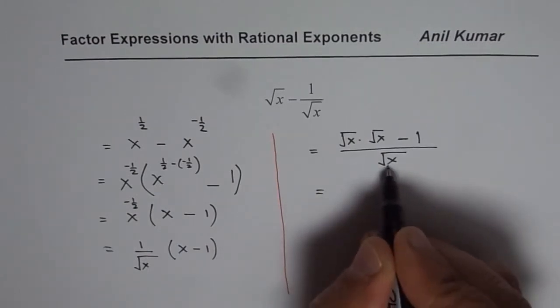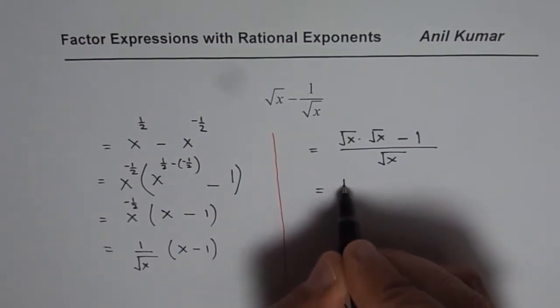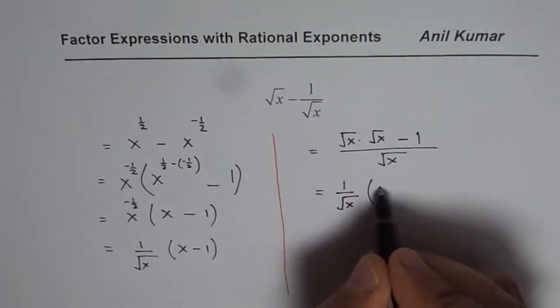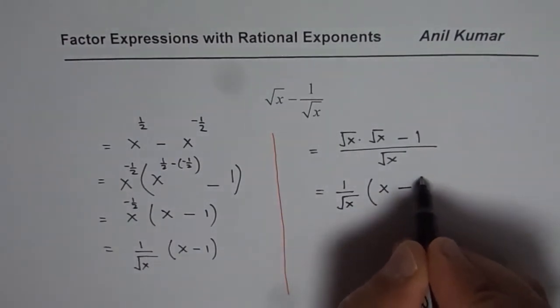Now that really means that 1 over square root of x is common. So you could write this as 1 over square root of x and within bracket square root of x times square root of x is x and we get x minus 1.